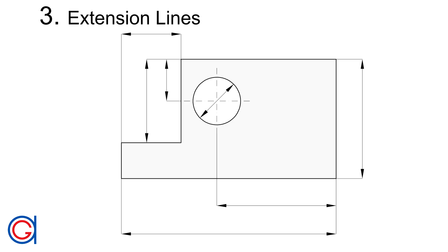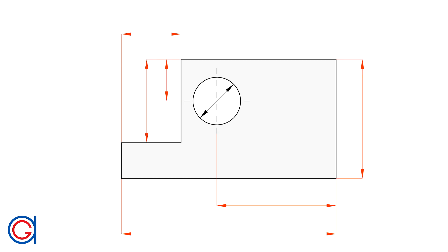Rule 3: The extension lines, which are the lines that connect the object with the dimension lines, can't finish at the arrowhead or the termination symbol. They must be slightly longer, as shown with the green color on the screen.